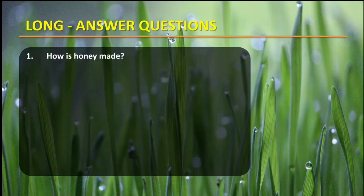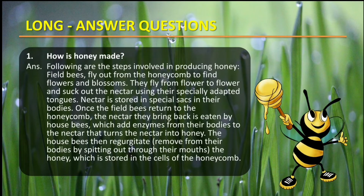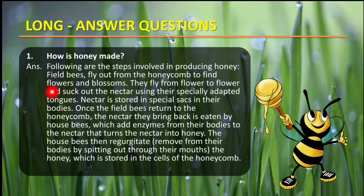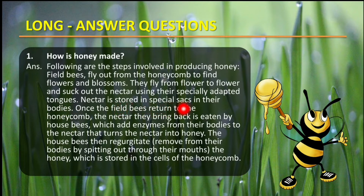First question: How is honey made? The following are the steps involved in producing honey. Field bees fly out from the honeycomb to find flowers and blossoms. They fly from flower to flower and suck out the nectar using their specially adapted tongues. Nectar is stored in a special sack in their bodies.